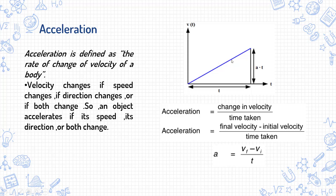This graph shows that acceleration is produced. As we can see, this is a velocity-time graph and the slope of this graph will give us acceleration. Acceleration is equal to change in velocity over time taken. Change in velocity is the difference of final and initial velocity over time taken. Representing acceleration by a, final velocity by vf, initial velocity by vi, and time by t, we get: a = (vf - vi) / t, which defines acceleration as the rate of change of velocity of a body.